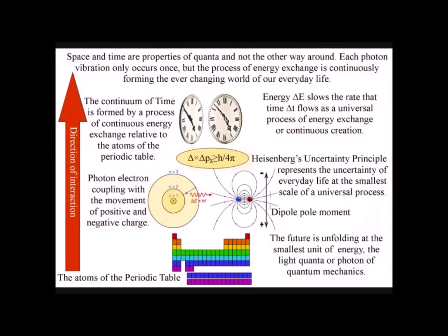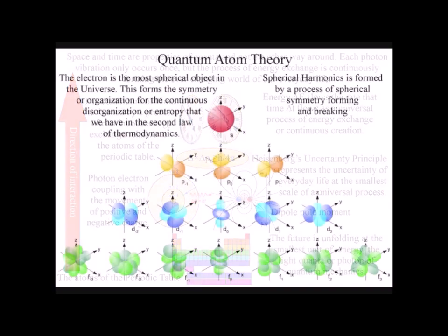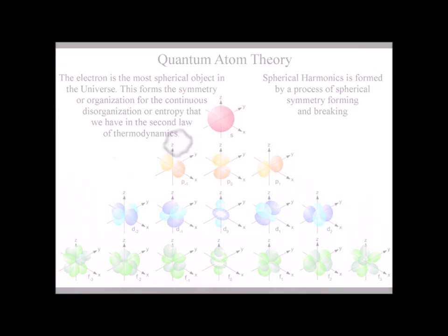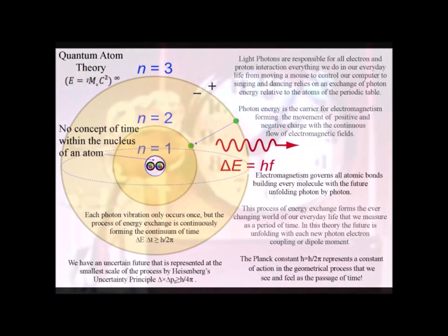In this theory, each point on the wavefront represents the potential for a photon-spherical oscillation or vibration. We have photon-electron couplings, or dipole moments, forming the potential for new spherical waves.